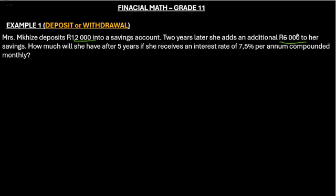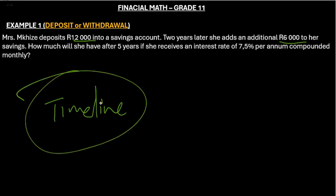So if that is the case, or in such cases, it is way too difficult to directly use the simple interest or the compound interest formula. So in such cases we need to make use of what we call a timeline.